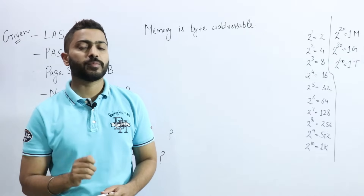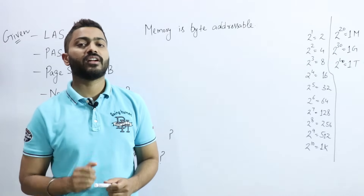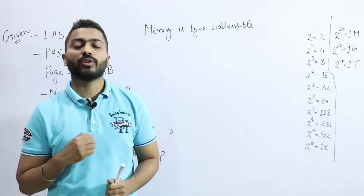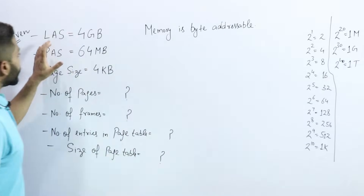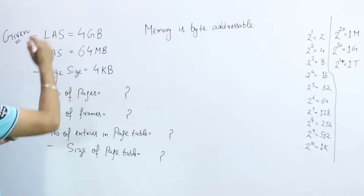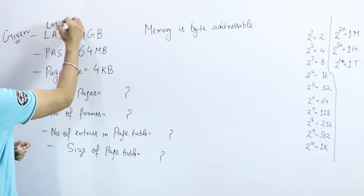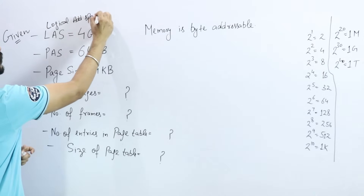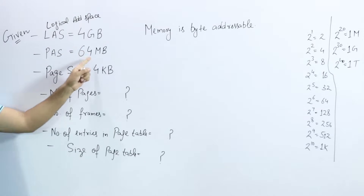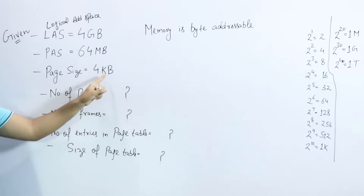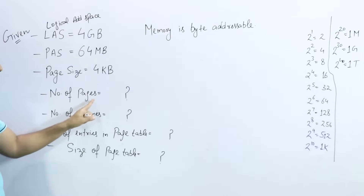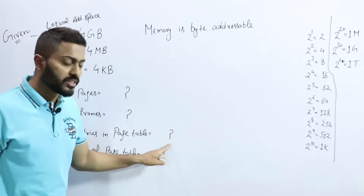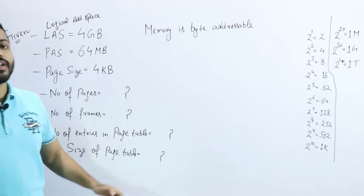Let's see one question on logical address space and physical address space — it will help you understand the concept in more depth. Logical address space is given as 4 GB, physical address space 64 MB, page size 4 KB. We have to find: the number of pages, number of frames, number of entries in the page table, and the size of the page table.